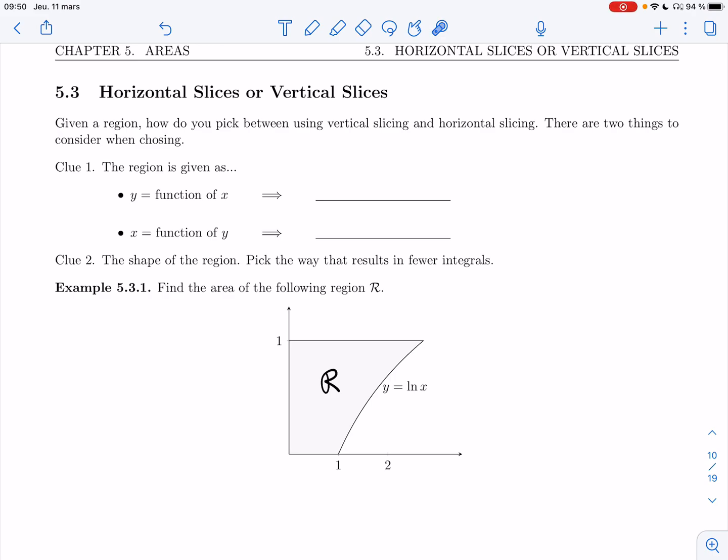So far in this chapter, we've seen two different ways of finding the area of a region. We've seen that you could use horizontal slices, that was in the last section, section 5.2, and we've seen vertical slices in section 5.1.